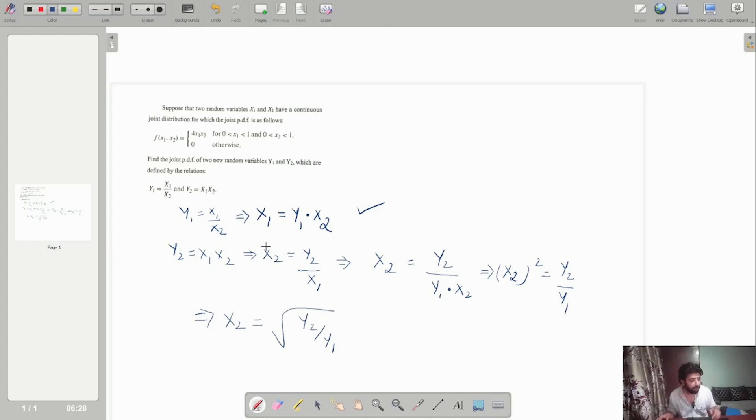Now what I can do is use this value also back into my equation. x1 equals y1 by x2, then I will get x1 equals y1 multiplied by square root of y1 over square root of y2, which will give me x1 as square root of y1 y2. So I have now the value for x1 here and similarly I have the value here for my x2.